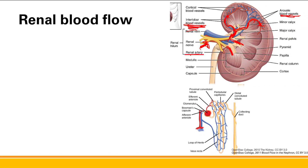Interlobular arteries feed into the individual nephrons — the tiny functional units too small to be shown at this scale. The interlobular artery feeds into the afferent arteriole, which runs into the glomerulus. Blood can either be filtered into the renal tubules (about 20%) or keep going into the efferent arteriole (about 80%). The filtered portion becomes filtrate in the tubules, and the remaining blood in the efferent arteriole branches into peritubular capillaries that supply the nephron tubules.